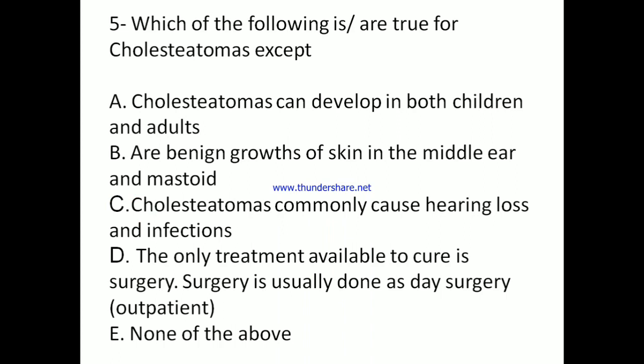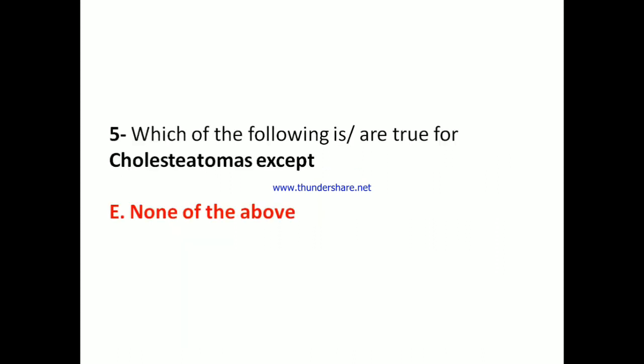Question 5: Which of the following is/are true for cholesteatomas except? A) Cholesteatomas can develop in both children and adults. B) Are benign growths of skin in the middle ear and mastoid. C) Commonly cause hearing loss and infections. D) The only treatment available to cure is surgery — usually done as day surgery outpatient. Answer: E) None of the above.